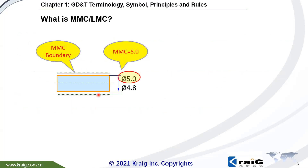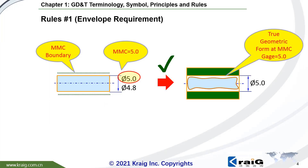This is the true geometrical form — it's a straight cylindrical boundary. All of the surface of this cylinder should be within this boundary. We can simulate this boundary with a gauge here — there's a tube and the diameter of this tube is 5.0, simulating the true geometrical form at MMC. This pin should be fitted into this boundary.